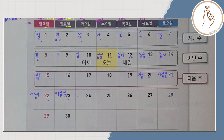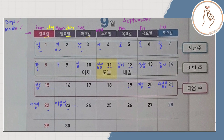Now we have additional vocabulary. We have oje — that means yesterday, kahapon. Then onil — today, ngayon. And neil — tomorrow or bukas. We also have due — that means week.